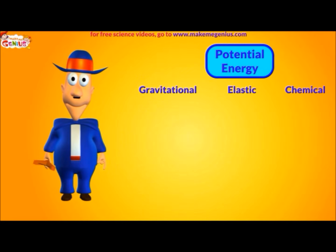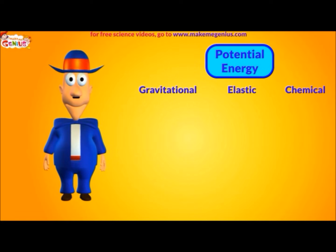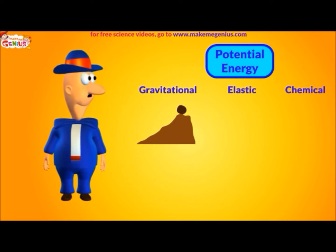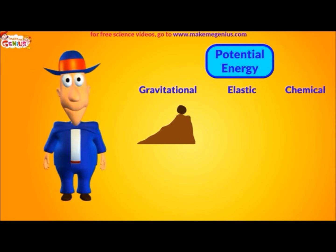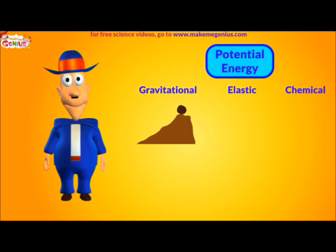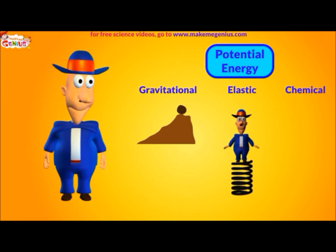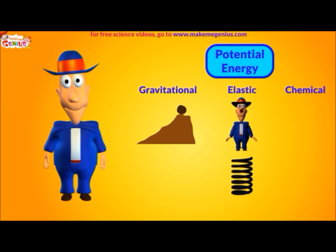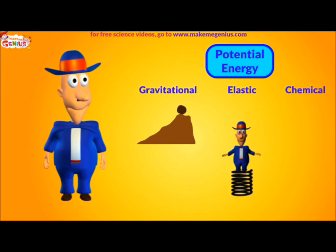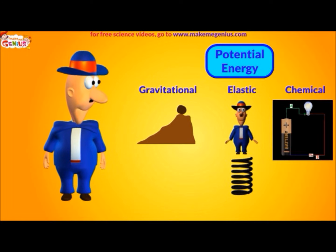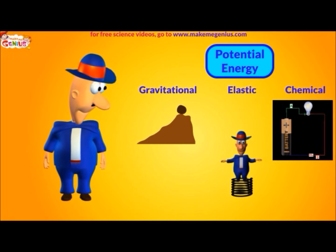There are three types of potential energy. Let's look at each type. This stone on the top of the mountain has gravitational potential energy — this is also called potential energy of an object due to its position. Now look at this: this is due to stored energy of the spring. This is a battery — it contains chemical potential energy. It can light a bulb.